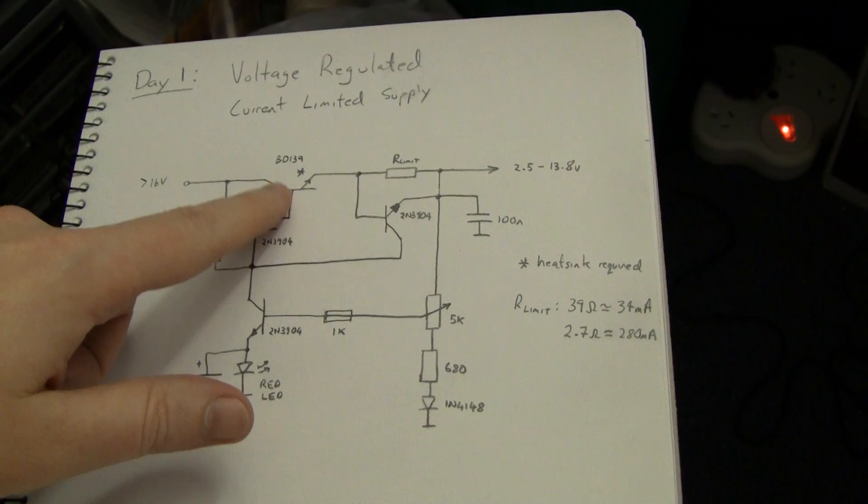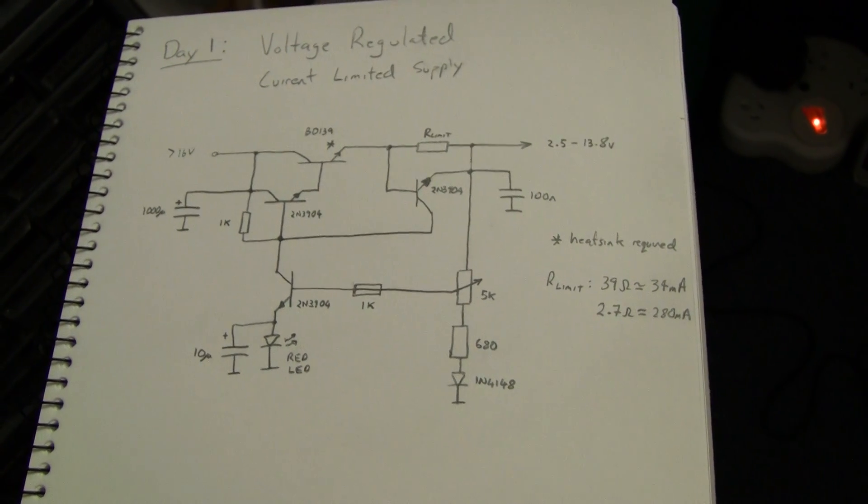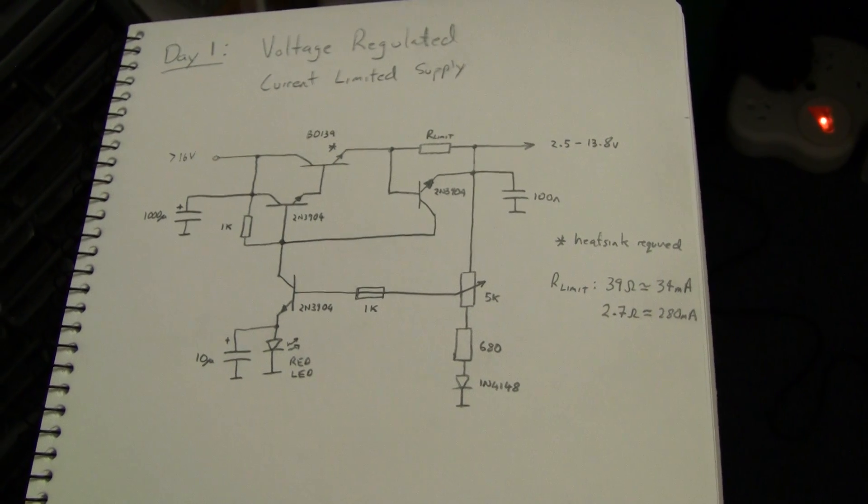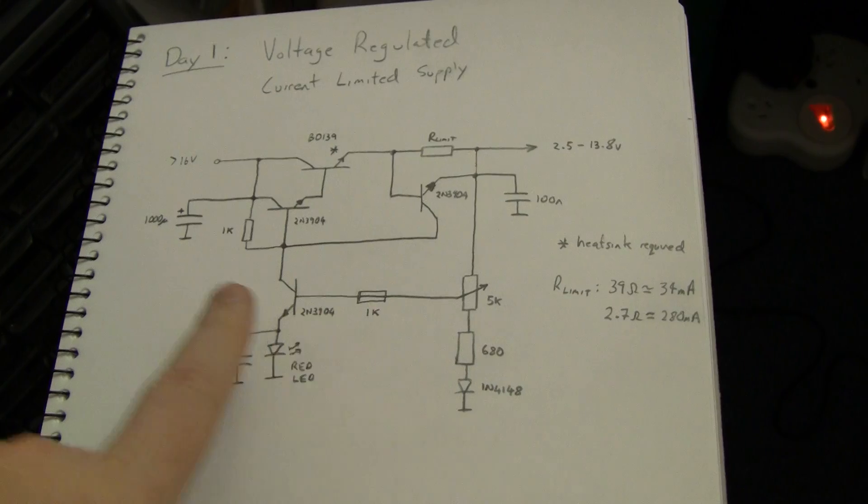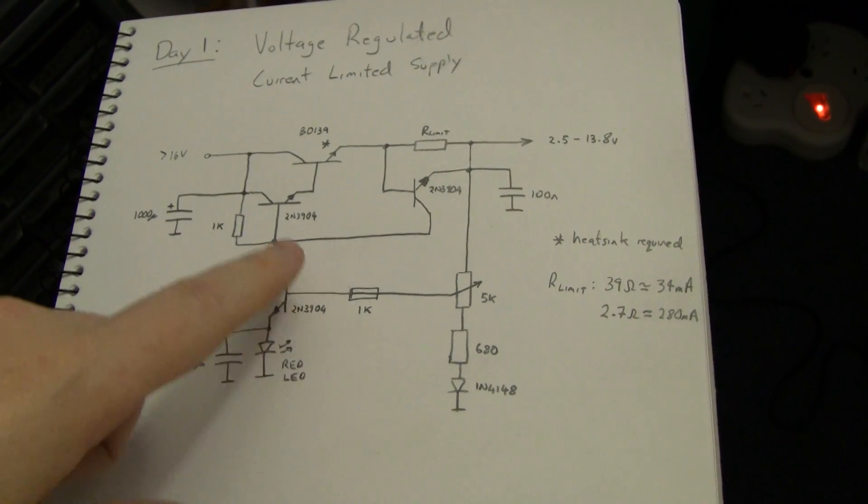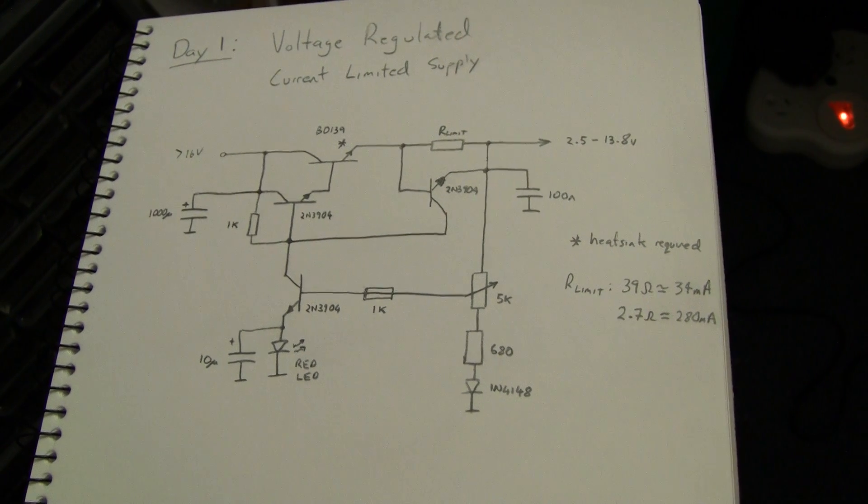I've used a BD139 in mine which limits the power handling of the entire device quite a bit, but you might want to use a TIP series transistor. Everything else should be fine, the 2N3904s or any generic NPN should be fine for the transistors in the circuit.